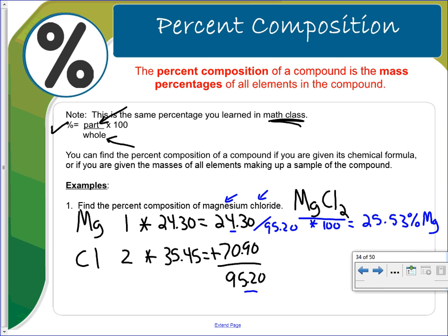So when we do the percent composition for chlorine, how much of the 95.20 is chlorine? 70.90. So we take the 70.90, which is the part, divide it by the whole amount. And once we do that, we multiply it by 100. And we'll find that that percentage is 74.47 percent is chlorine.